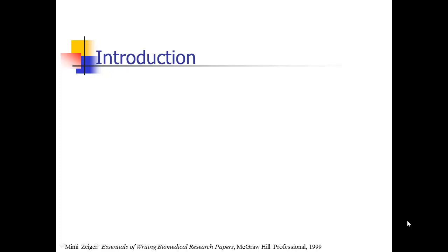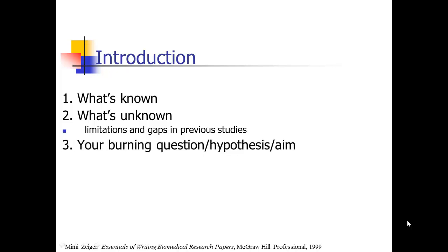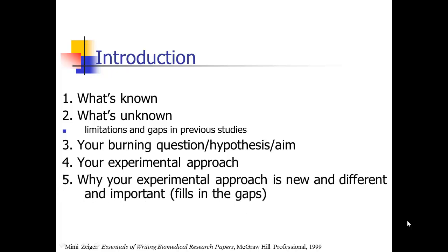Similarly, Mimi Zeiger in her book gives a similar structure for the introduction. She says you start with what's known — the previous studies — then give what's unknown, the gaps and limitations in those previous studies. Then you move right to a specific statement about your purpose, question, hypothesis, or aim — 'we aim to,' 'we hypothesize that' — and give a little bit about your experimental approach and why it's new, different, and important. In other words, how does it fill in the gaps in the previous literature?